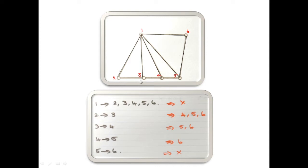So two is adjacent to three. The non-adjacent vertices remaining are four, five, and six, because there are totally six vertices. After three, the non-adjacent vertices are four, five, and six, because the closure definition says you have to join a pair of non-adjacent vertices. Now three is adjacent to four — two and one are already handled — so it is adjacent to four, and the non-adjacent are five and six.